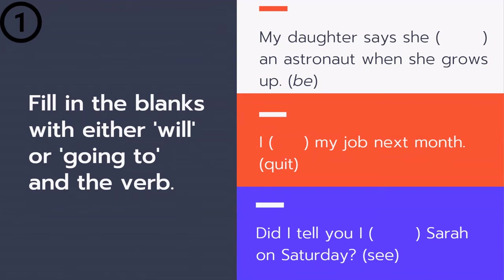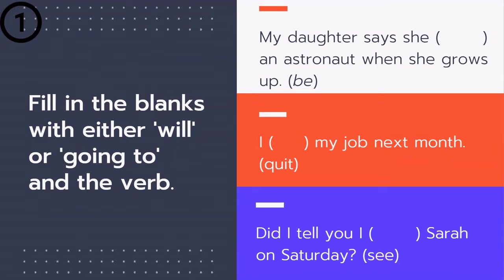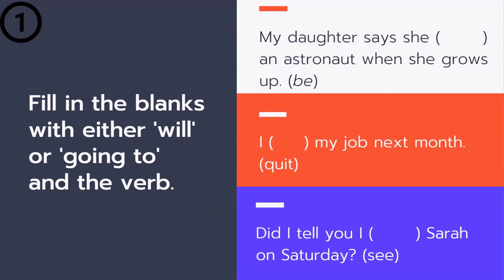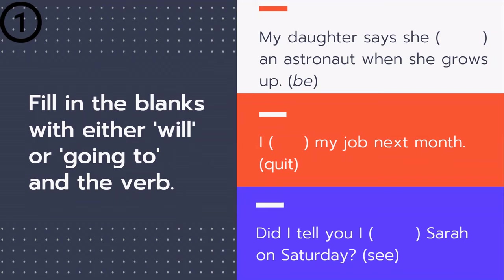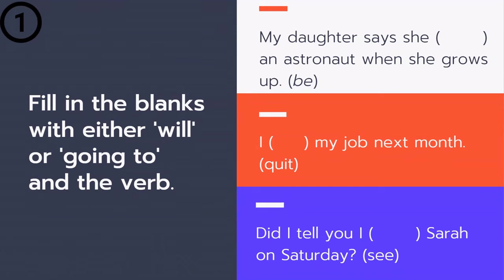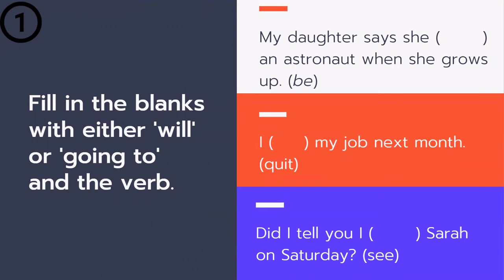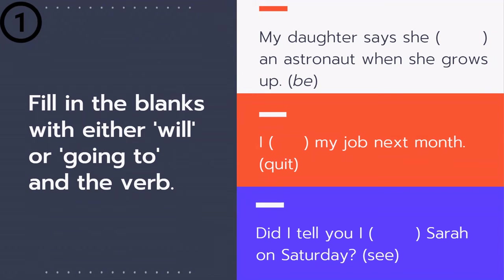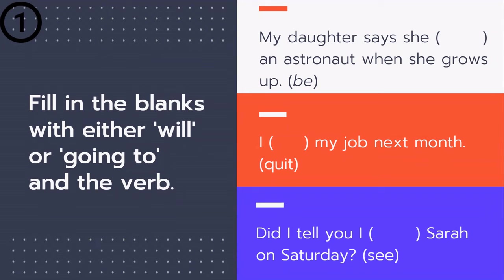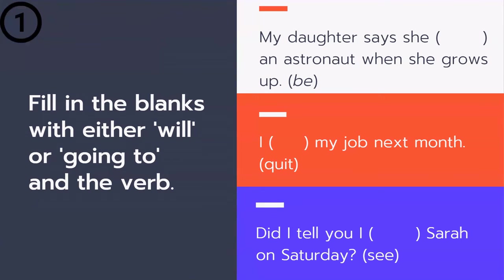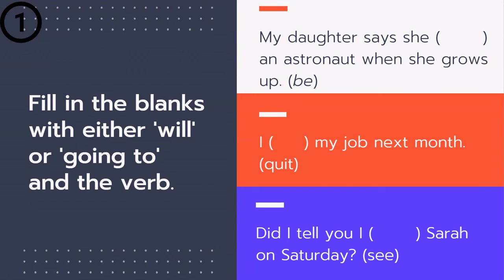The answer is 'going to be.' Why? Because it's a decision that has already been made about the future prior to the moment of speaking. When we talk about decisions made about the future prior to the moment of speaking, we use going to. So: 'My daughter says she is going to be an astronaut when she grows up.'